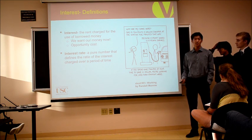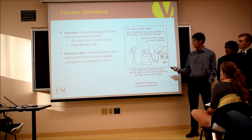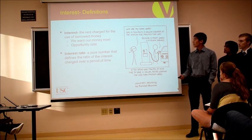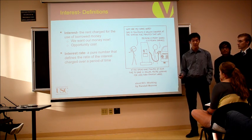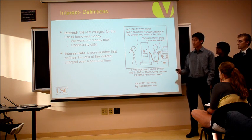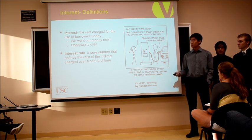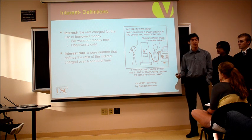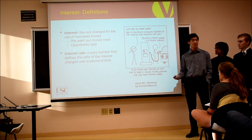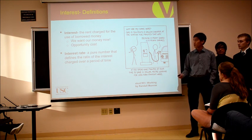So I'd like to start with a few simple definitions. Interest is the rent charge for the use of borrowed money, as Matt said earlier. We might ask why we want interest. As Matt also said, time is money. When you borrow money from the bank, the bank is unable to use that money. Therefore, the bank would like some compensation for not having the ability to use it — that's why they charge interest. This can also be represented by the concept of opportunity cost.